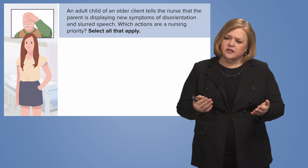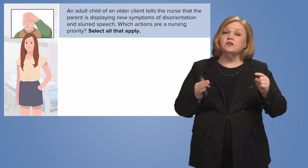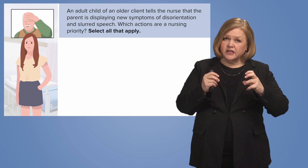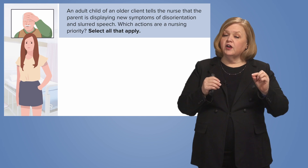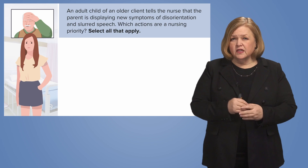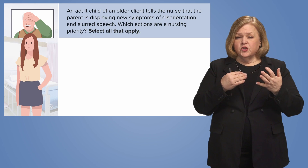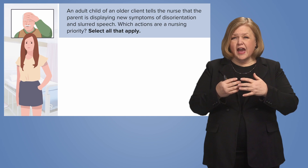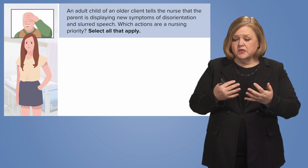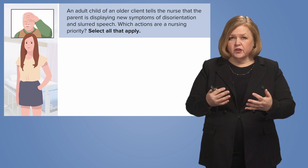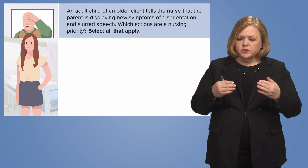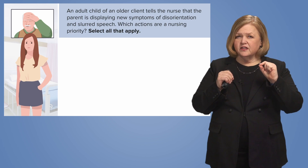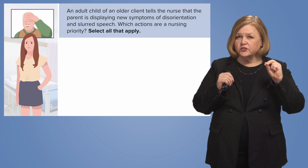Here's how I would do it. Remember, what matters is that you do the mental gymnastics to think through this question, because the work it takes to reword it into your own words will help make sure you don't miss something. An adult child of an older client has told us the client is now displaying abnormal behaviors or assessments. So what is my priority? In the nursing clinical judgment model, you're supposed to recognize cues — and the cues here are a new onset of disorientation and slurred speech.